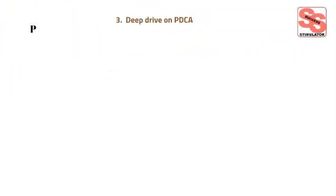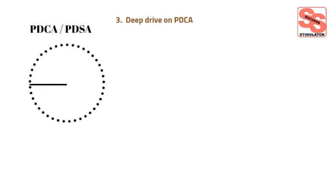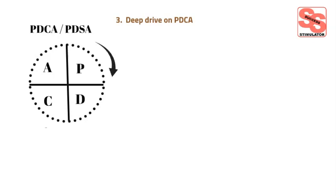Now let's look in detail at the PDCA cyclic approach. The PDCA cycle, also known as the PDSA cycle or Deming cycle, is a problem-solving method used for the continuous learning and improvement of a process or product. There are four basic steps in the PDCA or PDSA cycle.